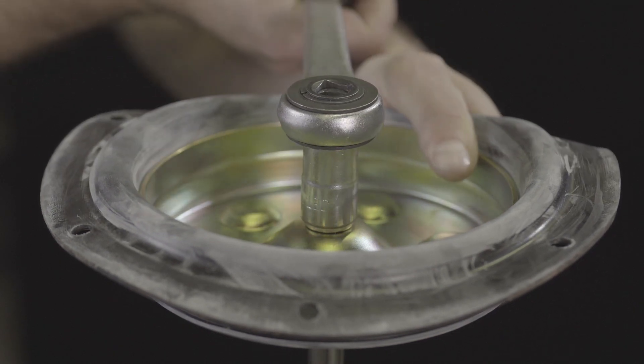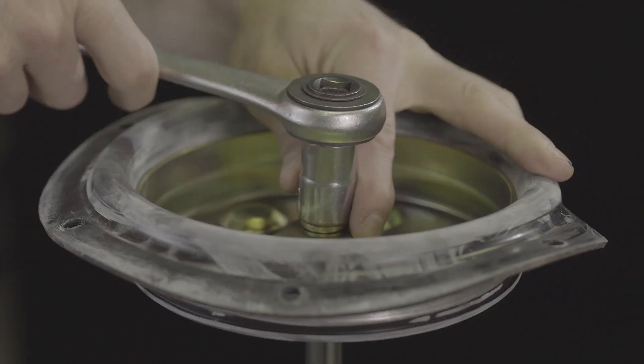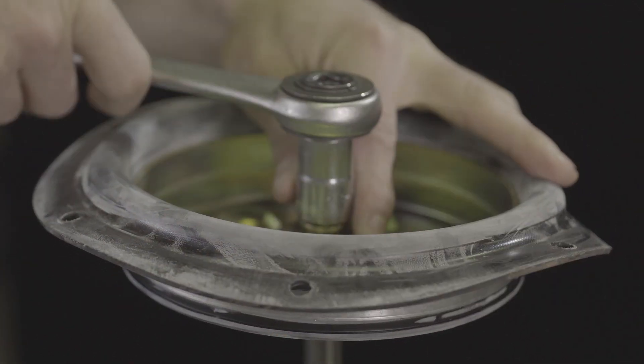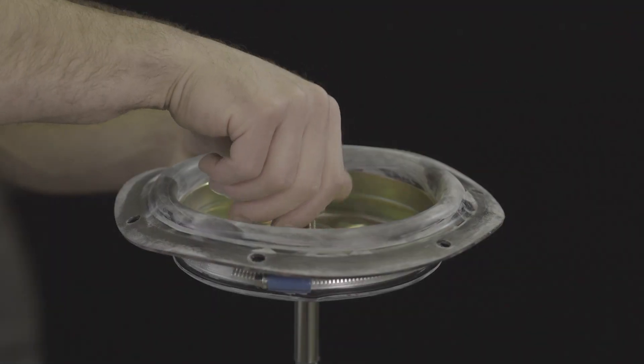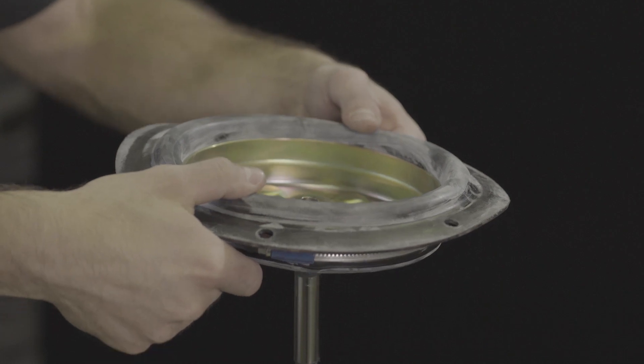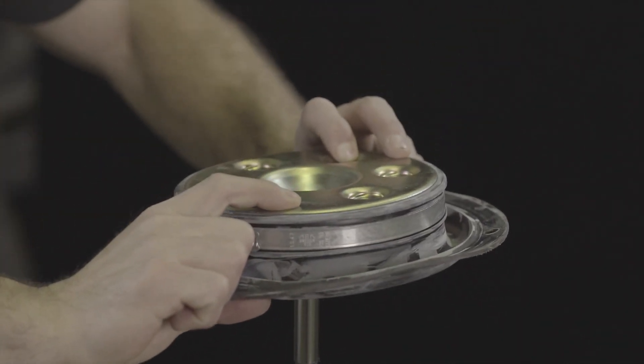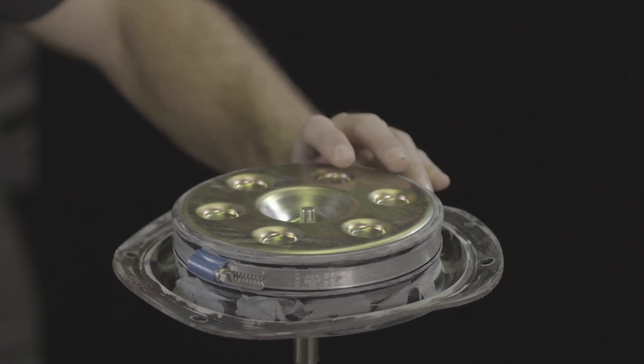Remove the collar nut. Remove the diaphragm plate from the actuator stem, flip upside down, and place them back onto the actuator stem.